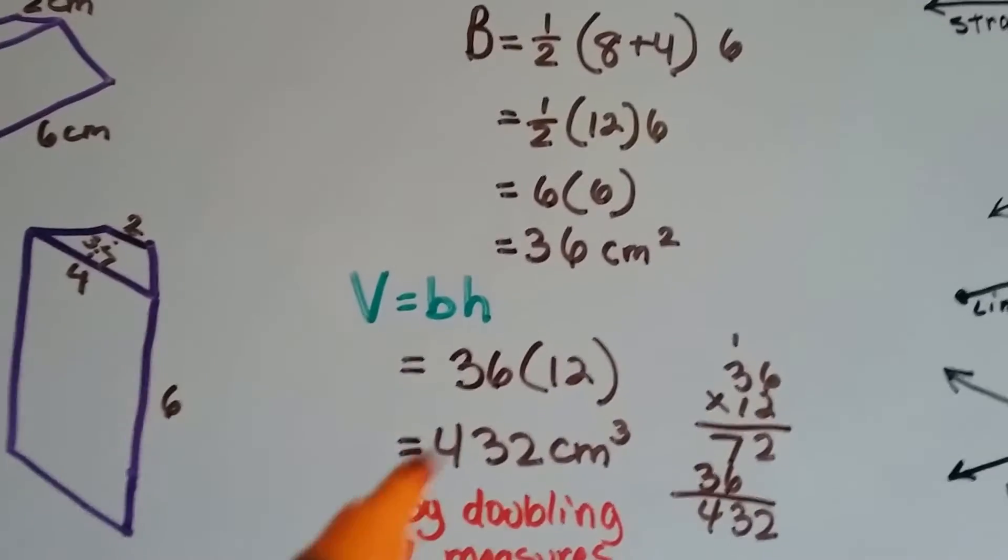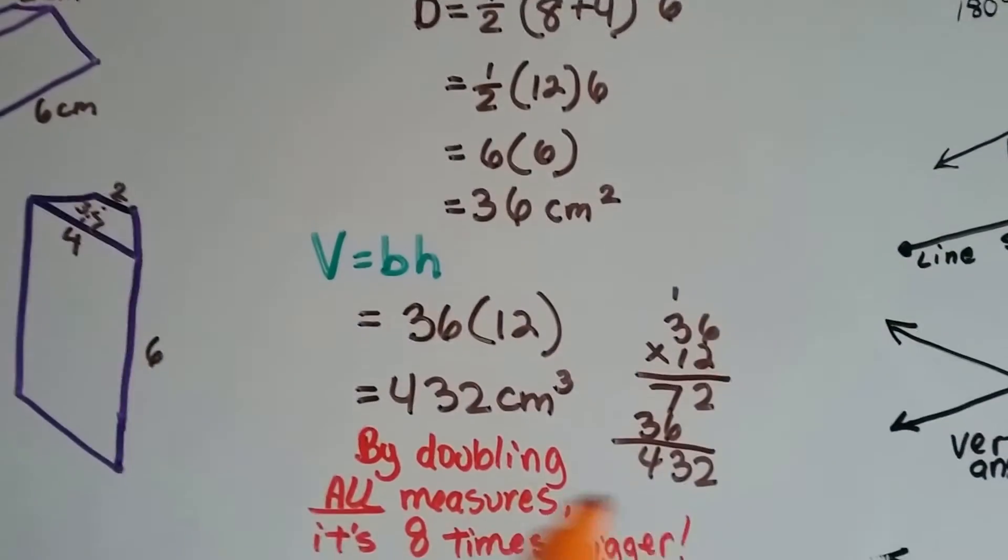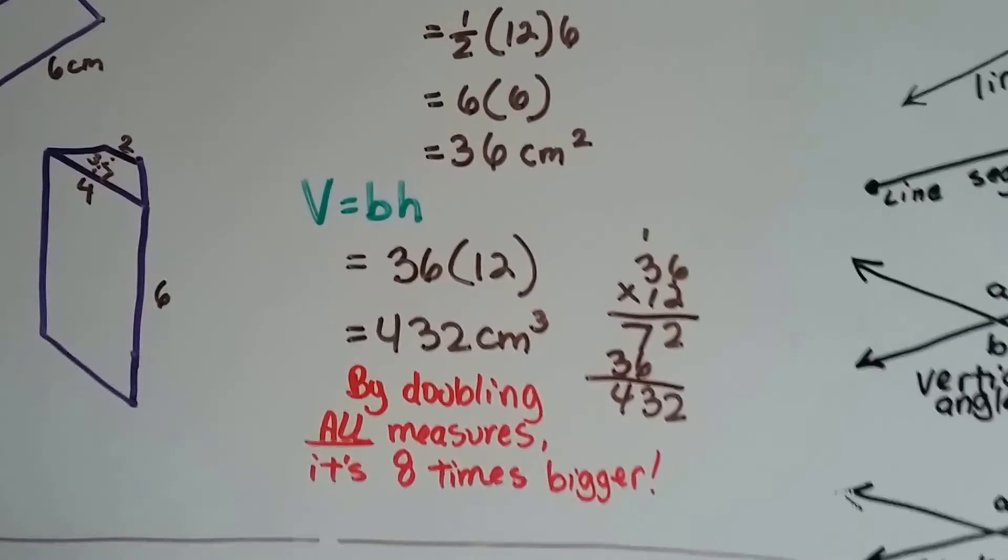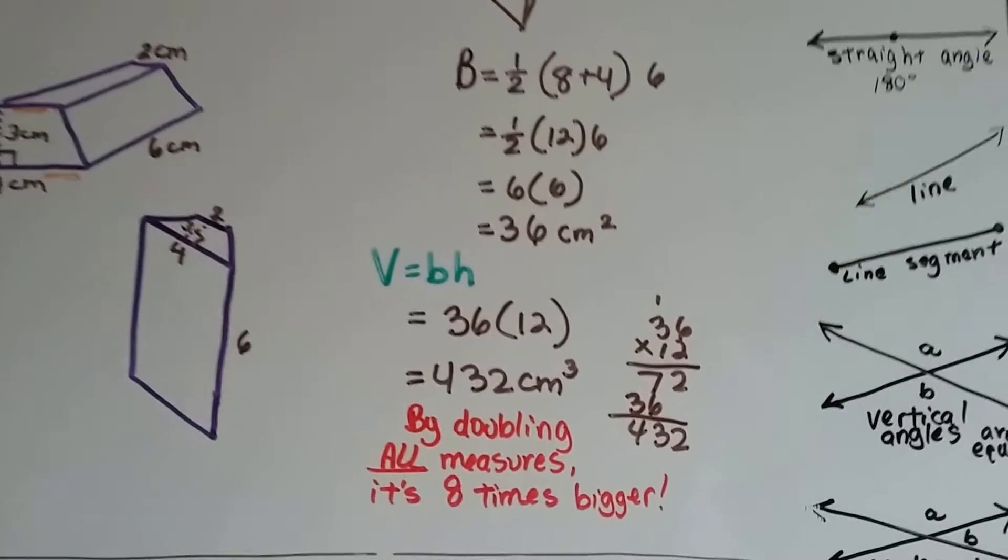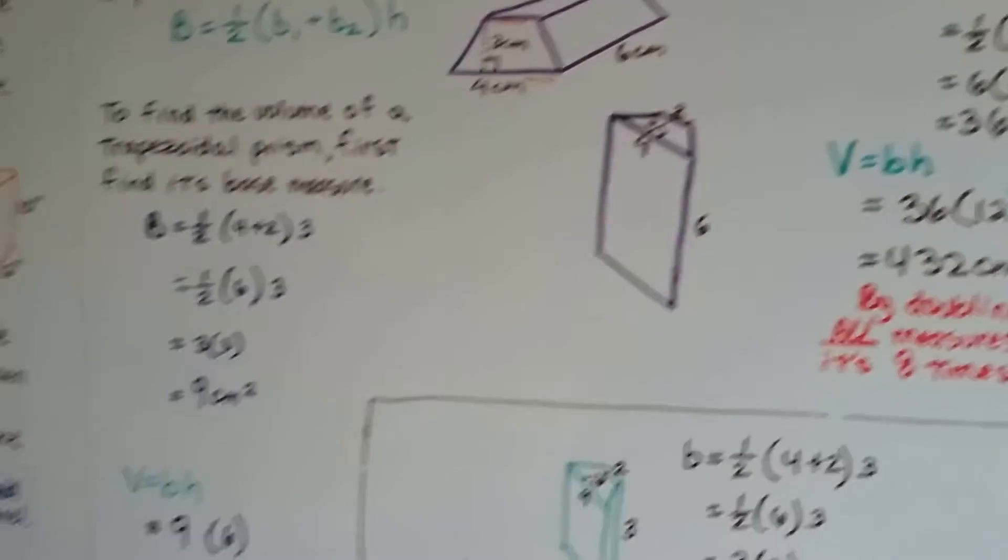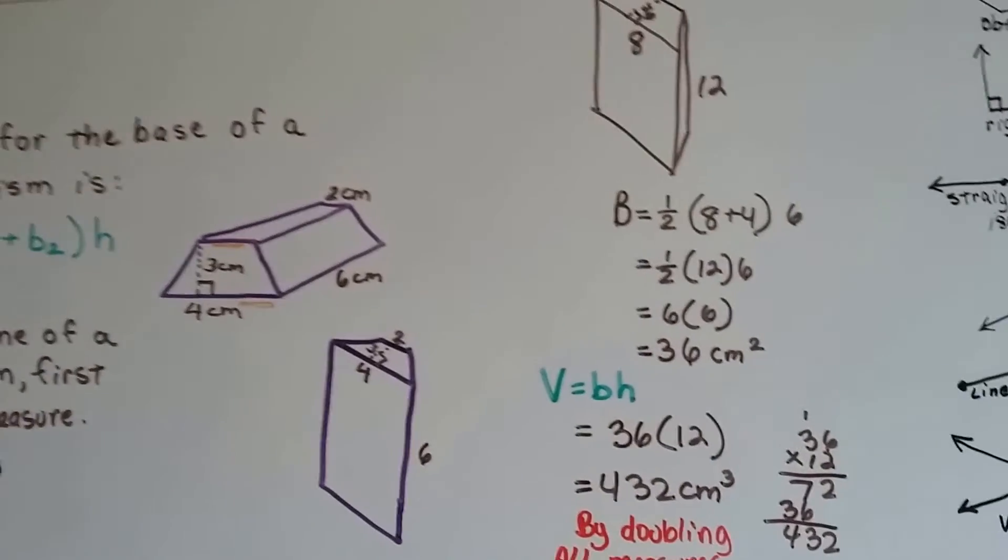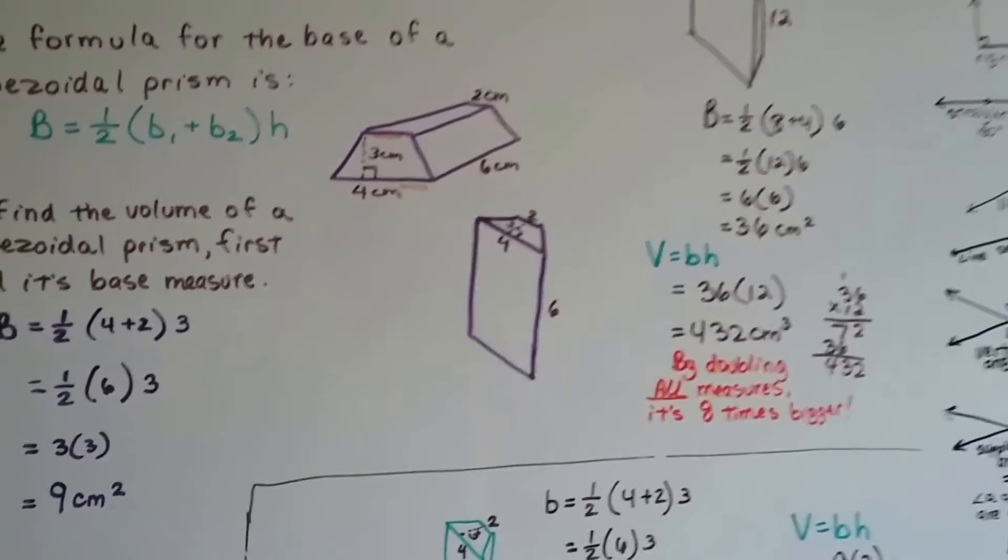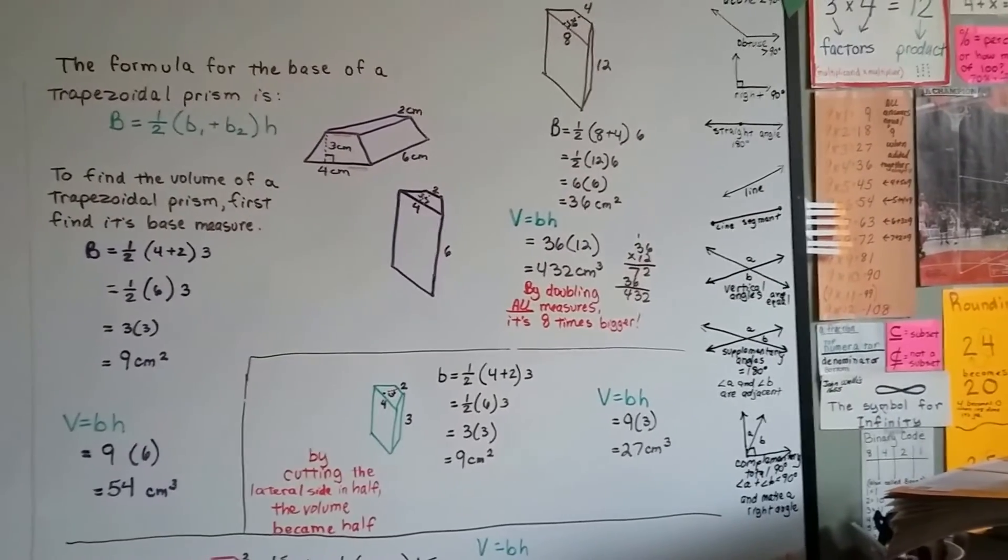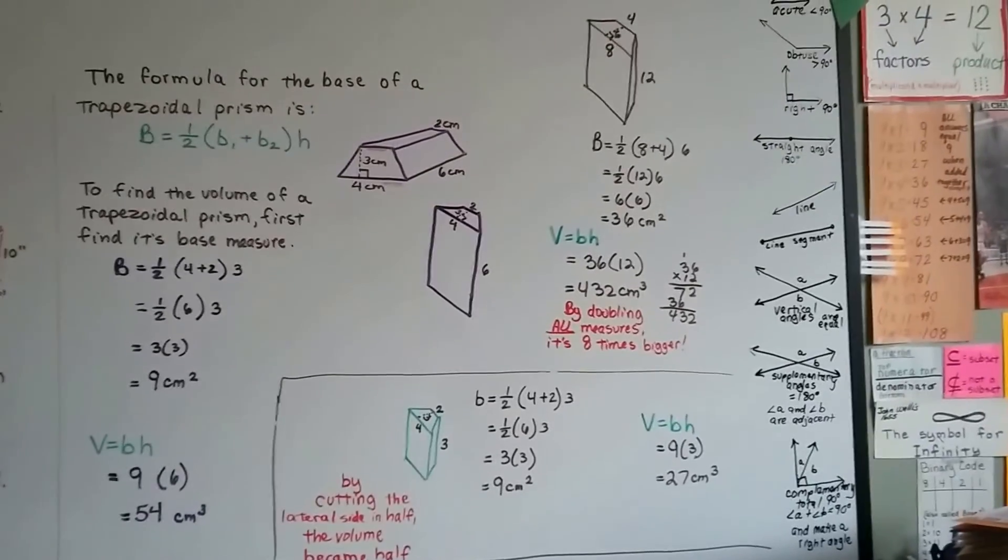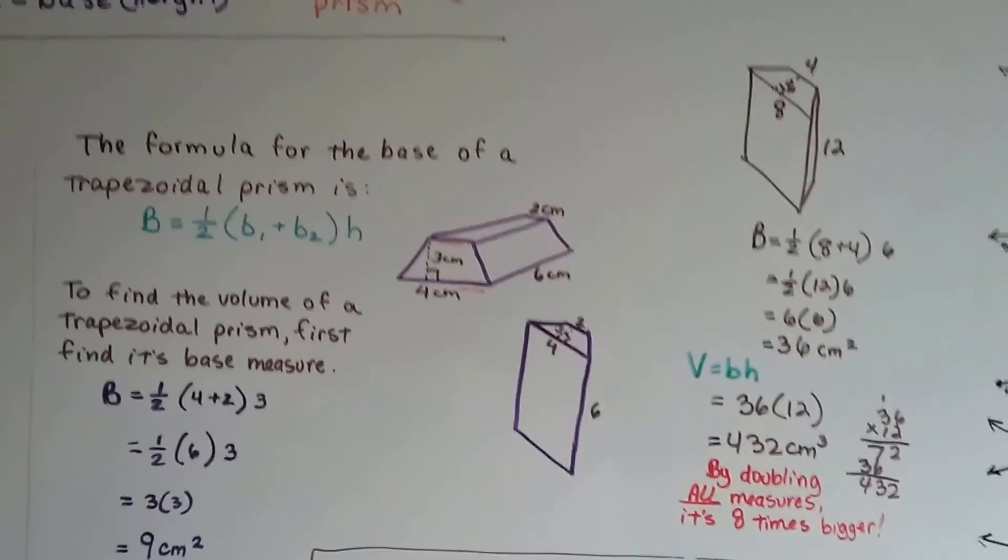Now we have to do the volume part of it. The base 36 times its height on its lateral side of 12 is 432. Well, by doubling all these measures, we made it 8 times bigger. 432 centimeters cubed instead of 54. That's 8 times larger by doubling all the measures. Isn't that amazing how that happened? So, now you know what happens when we play with the measures on a trapezoid for the volume. Alright, we're going to talk about the volume of a composite figure next, and I hope to see you there, and I hope this helped. Bye.